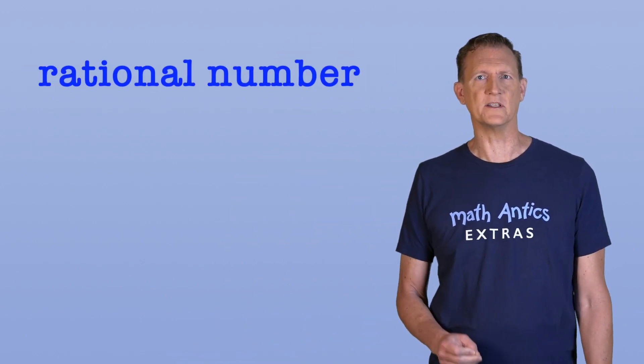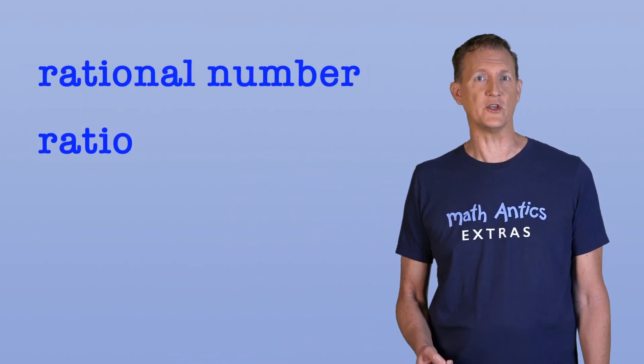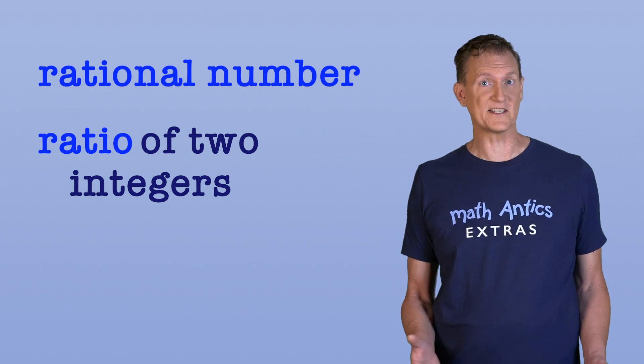To understand what an irrational number is, it helps to know what a rational number is. A rational number is any number that can be written as a ratio of two integers. Does that sound familiar?